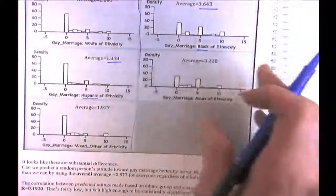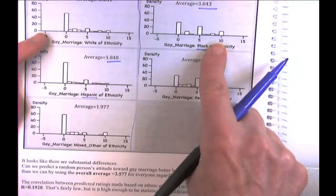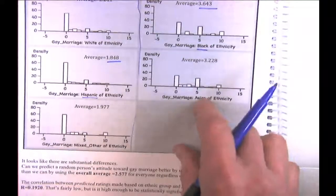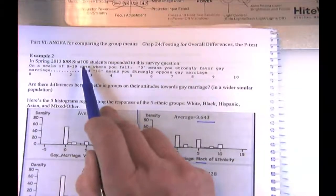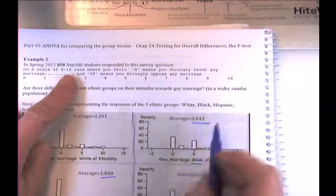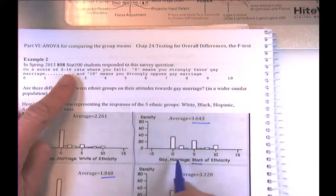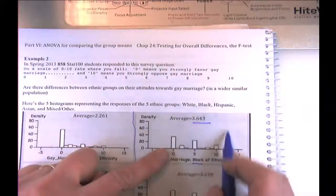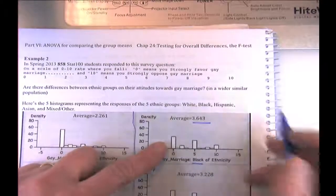So we're correlating 858 numbers — where each person gets their group's average as the predicted value — with their actual ratings. For example, all 99 people in one group would be assigned 3.643 as their prediction, but they'd have varying actual ratings including many zeros.